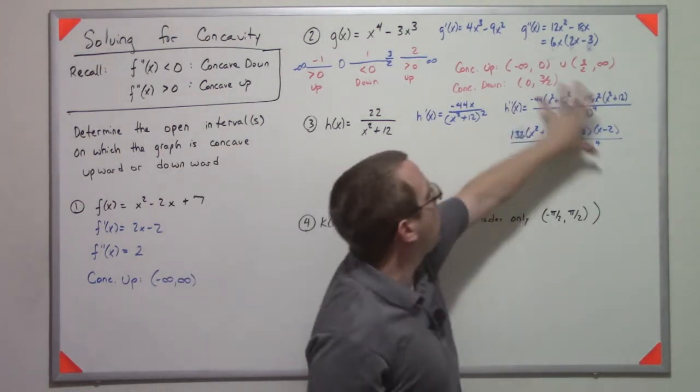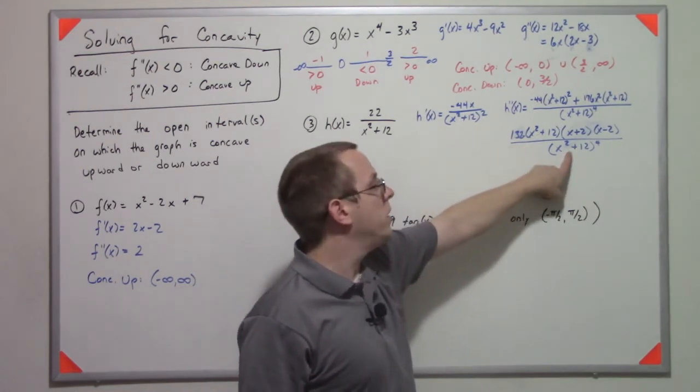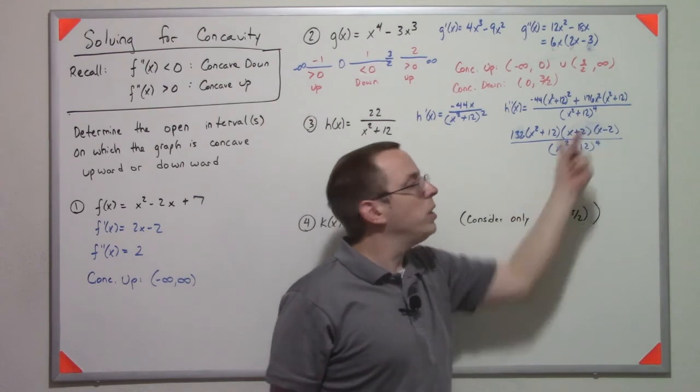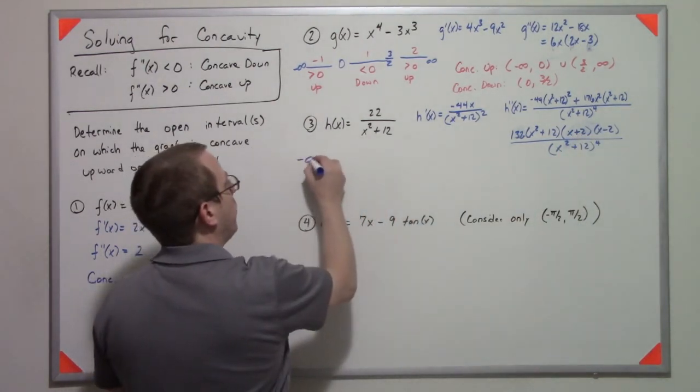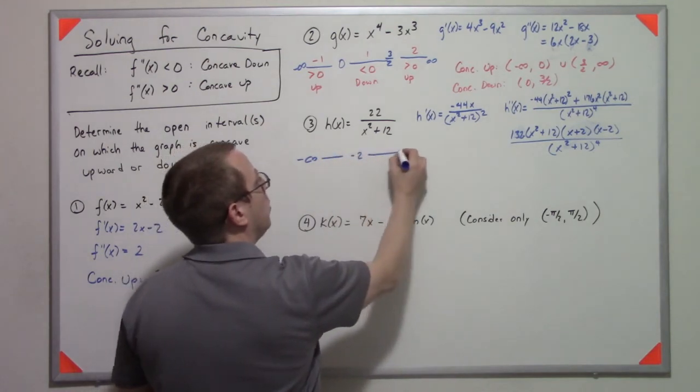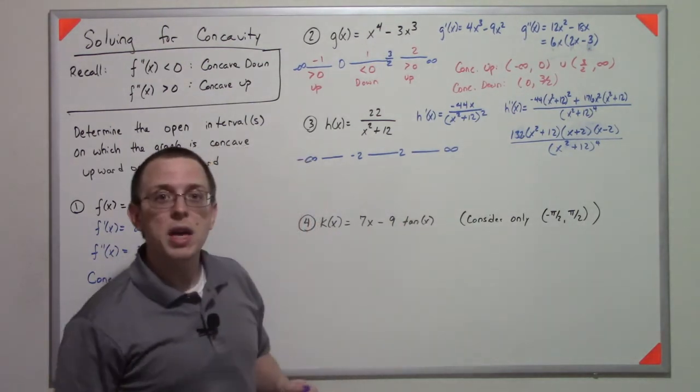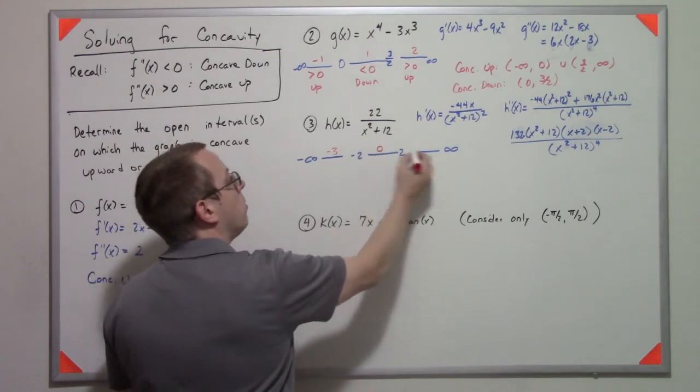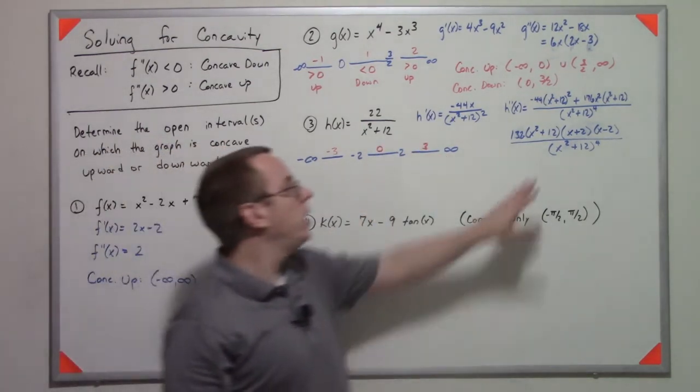So all that... Well this is always going to be positive, no matter what you plug in for x. This is going to be positive, no matter what you plug in for x. So the only things you really care about are that plus and minus 2. So you have negative infinity, negative 2, positive 2, positive infinity. So we just need to pick values between there. So let's try negative 3, 0, and 3.